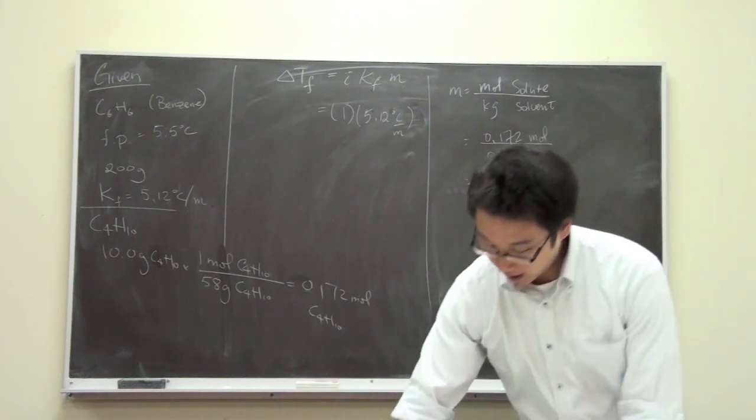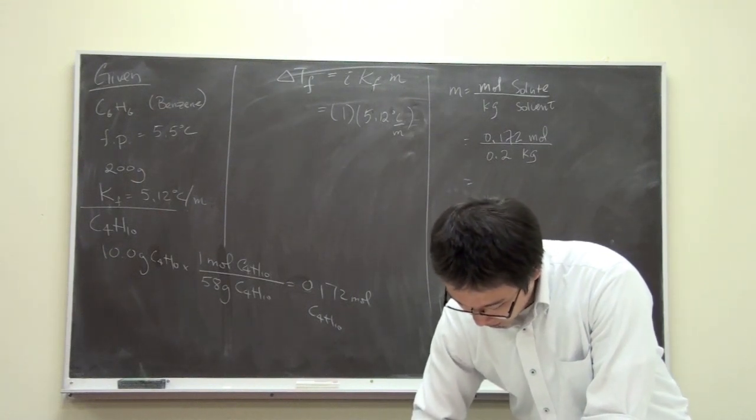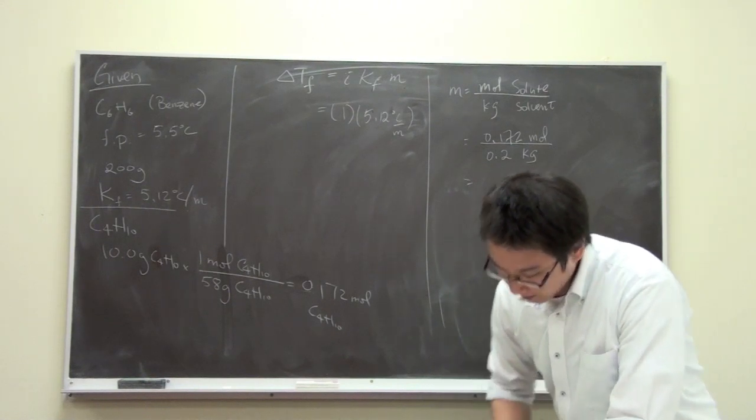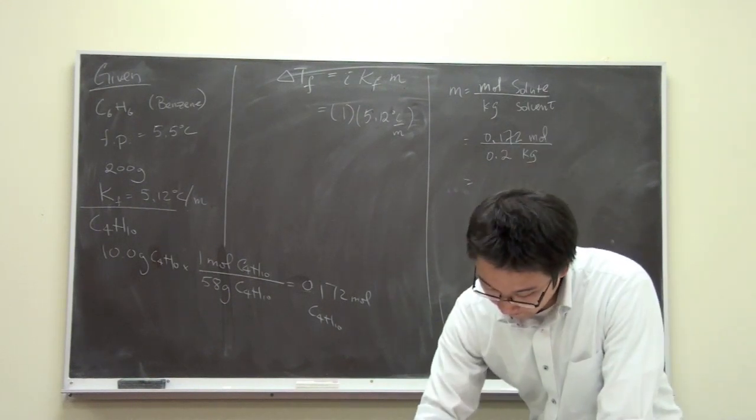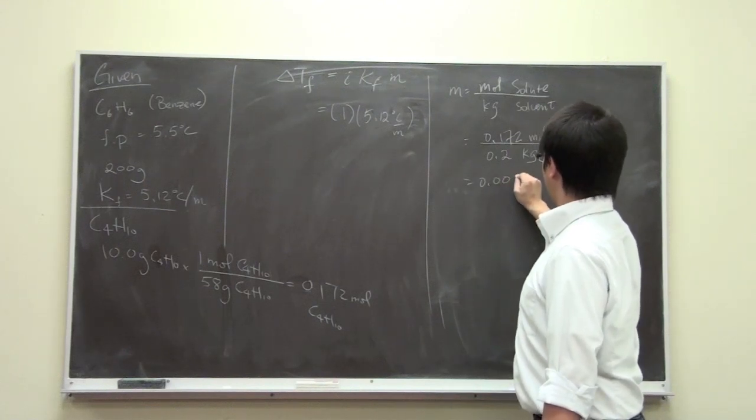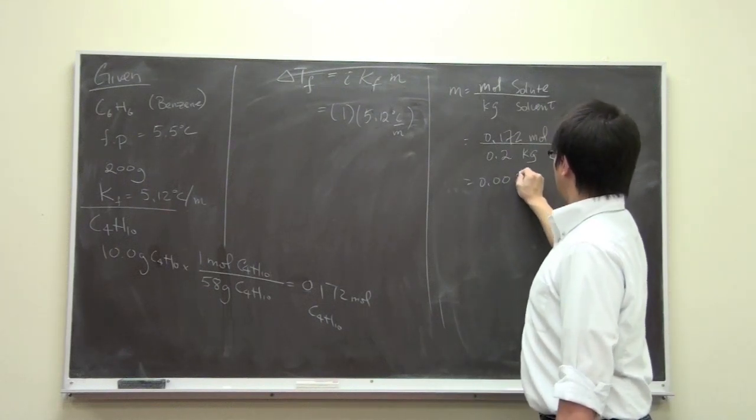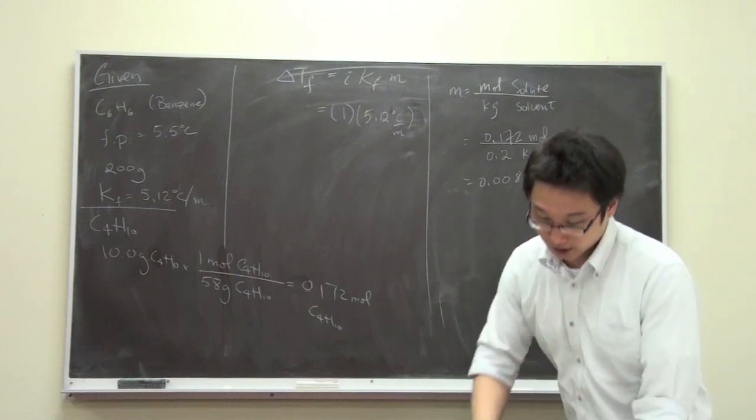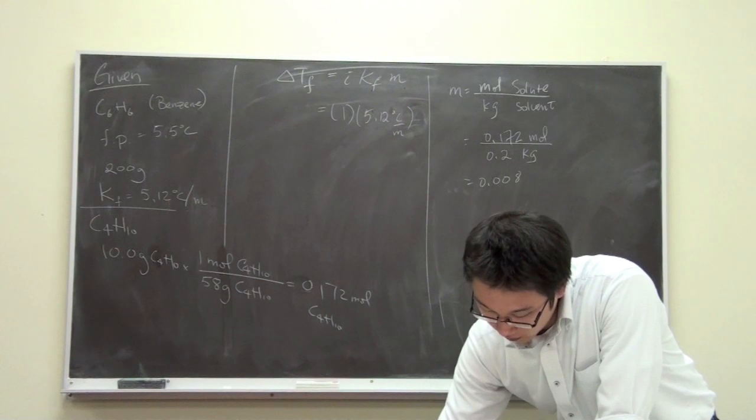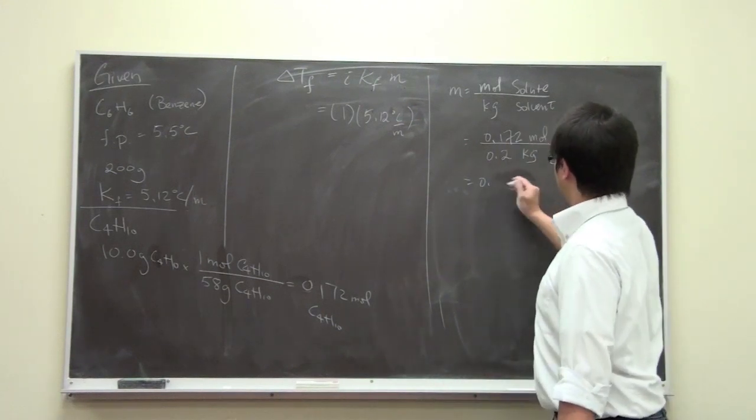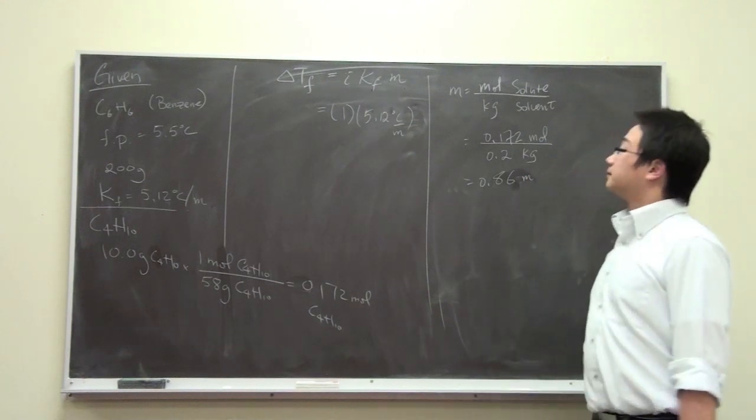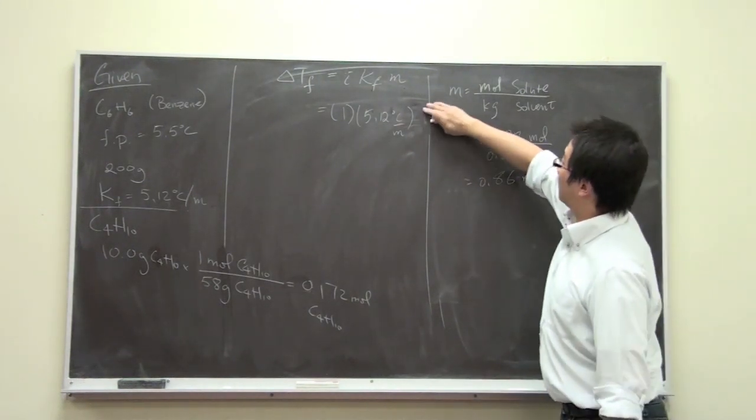If we use the calculator, 0.172 divided by 0.2, so it's 0.86. Then we can put it right here. And we can simply multiply all these together.